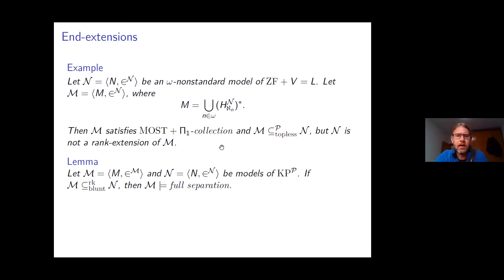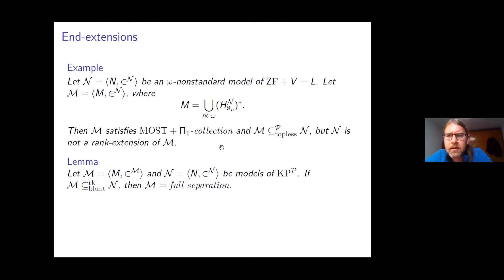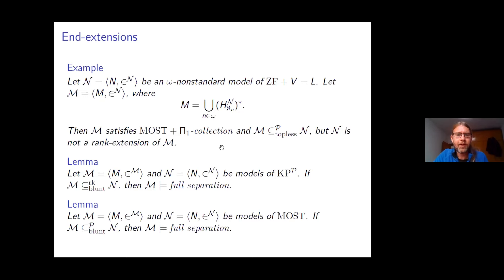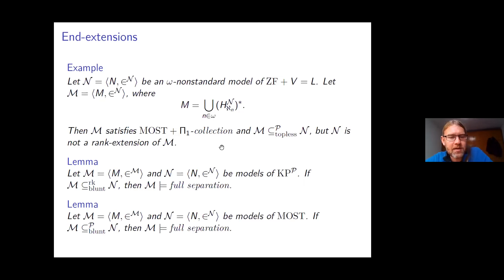The same holds if both M and N are models of MOST: using the H-kappas instead of ranks, if you have a blunt end extension you can realise M as an actual set of N and reduce any instance of full separation to bounded separation in N. In the context of arithmetic, Paris and Wilkie completely classified the countable models of IΔ₀ having end extensions. In particular, every countable nonstandard model of IΔ₀ + exp + BΣ₁ has a proper end extension satisfying IΔ₀.